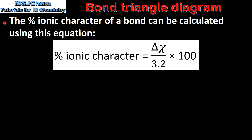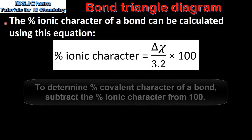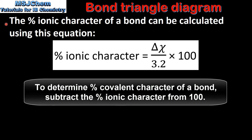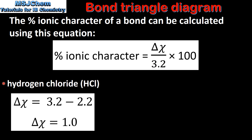Next we look at how to determine the percentage ionic character of a bond. The percentage ionic character of a bond can be calculated using this equation: percentage ionic character is equal to the difference in electronegativity between the two atoms divided by 3.2, multiplied by 100. Next we will calculate the percentage ionic character of the bond between the hydrogen and chlorine atom in hydrogen chloride.